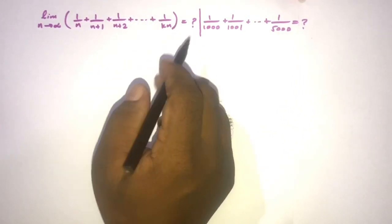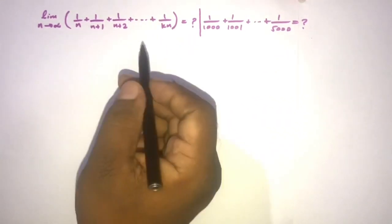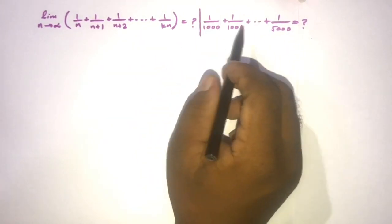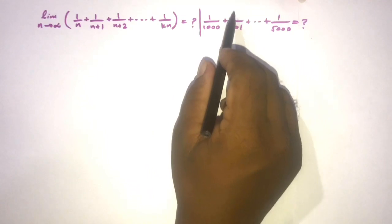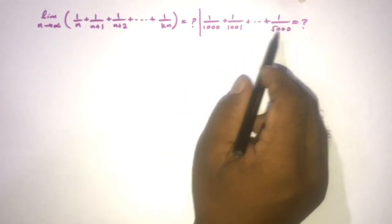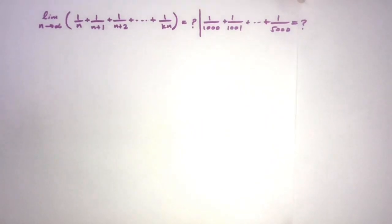Here k is a positive integer, and after that we will evaluate 1 over 1000 plus 1 over 1001, plus this is going to 1 over 5000. Okay, how to begin?